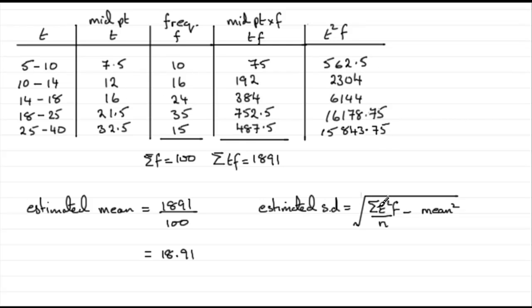So when it comes to working out sigma t squared f, we need to total this column, sigma t squared f, and total that, you should find you get 41033.